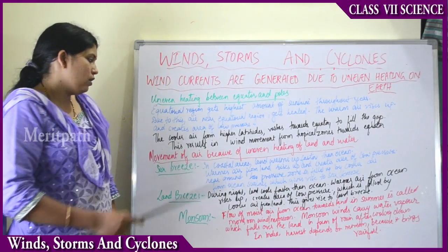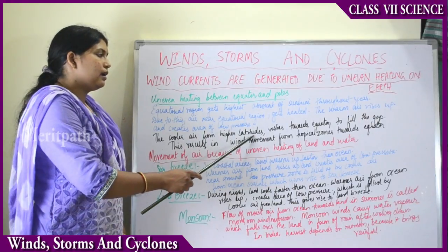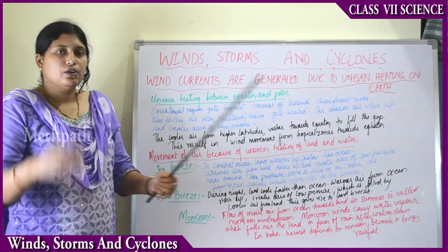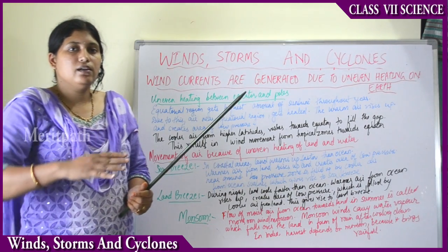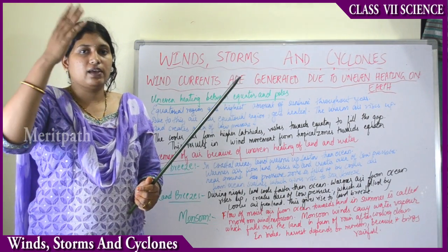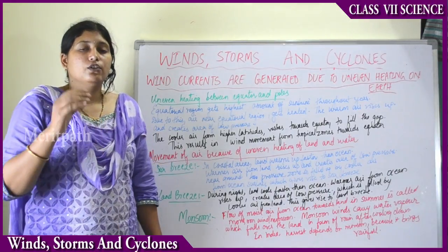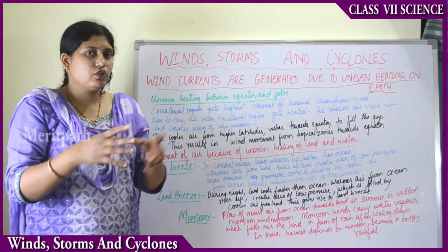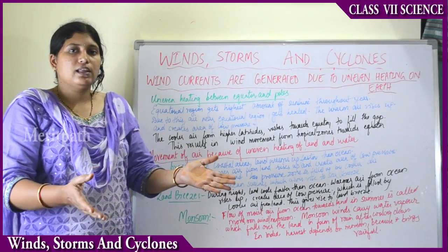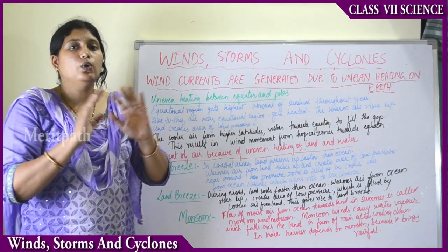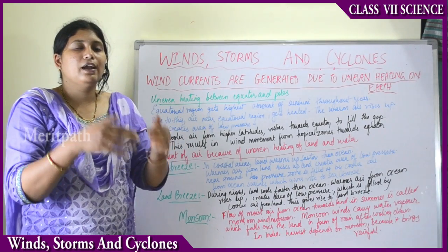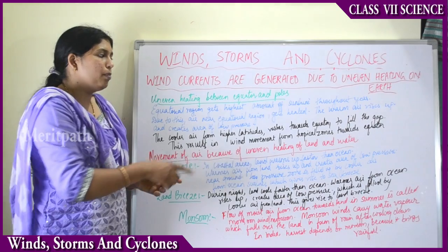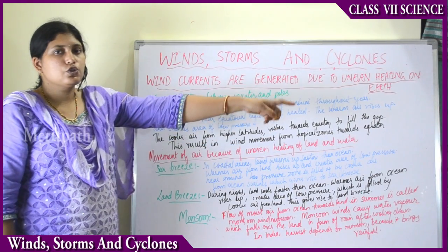The cooler air from higher altitudes rushes toward the equator to fill the gap created by the rising warm air. As the warm air rises, space is created in the equatorial region, and the cooler surrounding air comes to fill it. This results in wind movement from the tropical zones toward the equator.